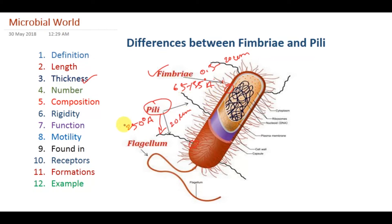Now we will look at their motility. For fimbriae, it has no motile action — it cannot move. On the other hand, pili can move, and their motility — as I discussed in my last lecture — is called crawling motility or twitching motility. This function is performed by one type of pili called Type IV pili, which mainly performs this motile function.